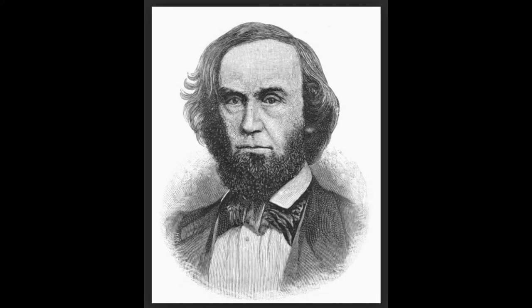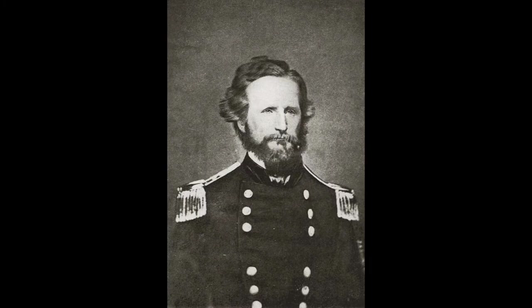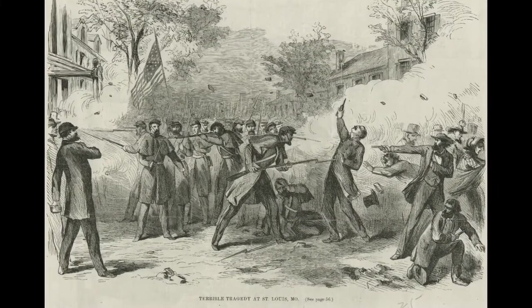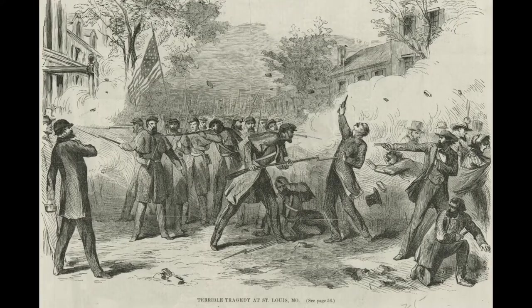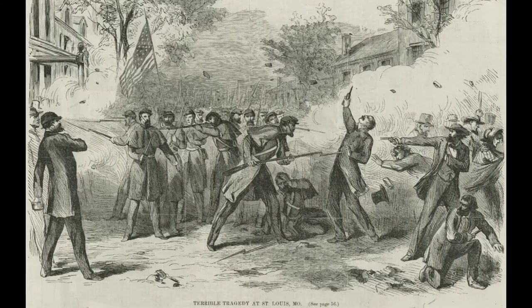That year, Governor Claiborne Fox Jackson's attempts to tip the state towards the Confederacy culminated at the Camp Jackson affair on May 10, 1861. Volunteer Union Army regiments under Brigadier General Nathaniel Lyon captured 669 secessionist state militia members at Camp Jackson, after learning the militia was planning to raid the federal arsenal in St. Louis. While marching the captives through town, a hostile crowd gathered, and after an initial gunshot, Lyon's men fired into the mob.